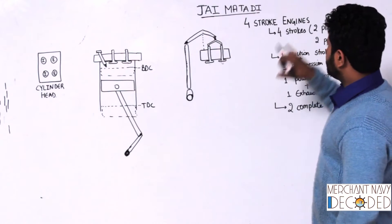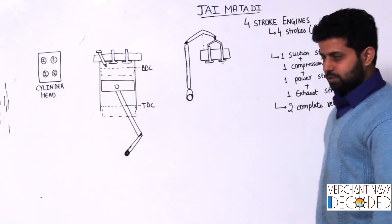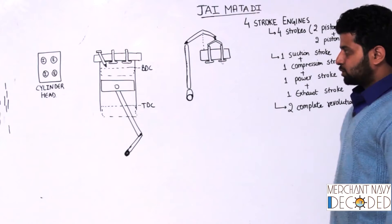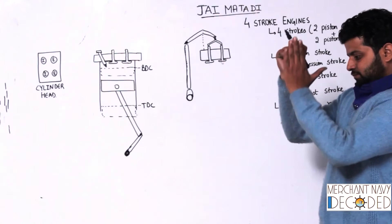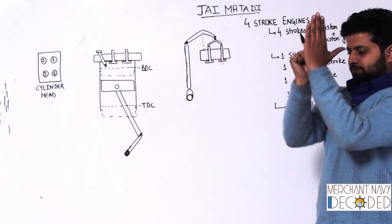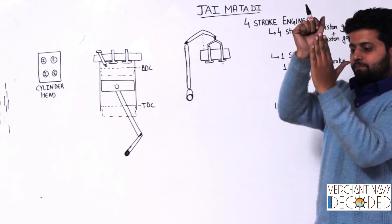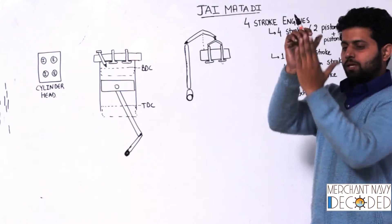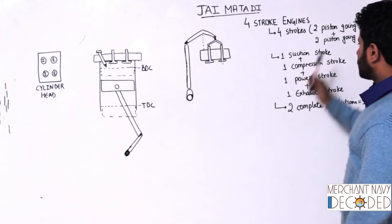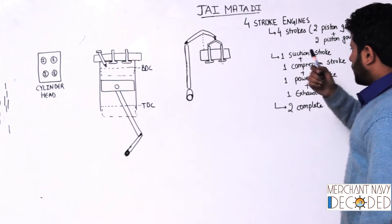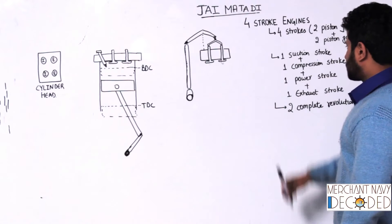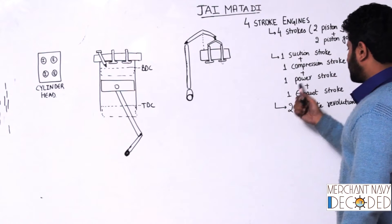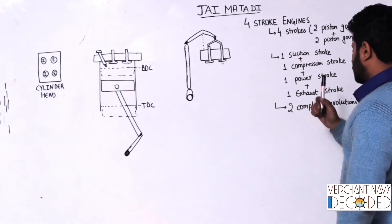So let's talk about four-stroke engines. Four-stroke engine means four strokes: piston coming down, piston going up, piston coming down, piston going up. What is happening in these strokes? One suction stroke, one compression stroke, one power stroke, one exhaust stroke.